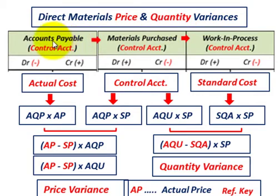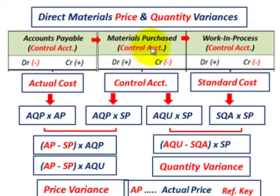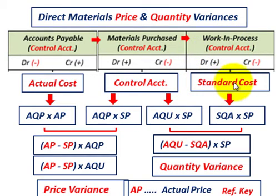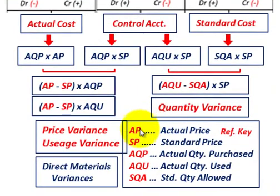We'd have these accounts here. We'd have an accounts payable for direct materials purchased at their actual cost, and then they're going to flow into a materials purchased control account, being inventoried in that account, and then they're going to flow into the work in process — a control account — at their standard cost.